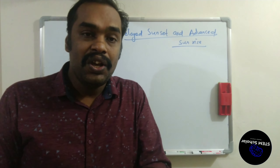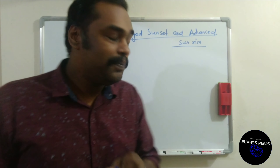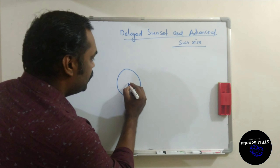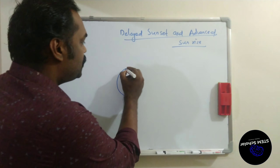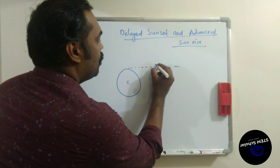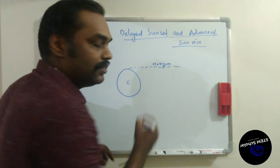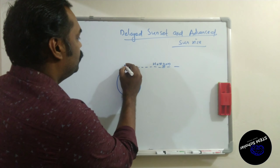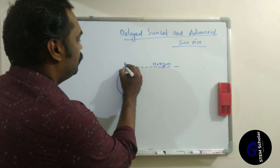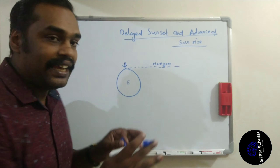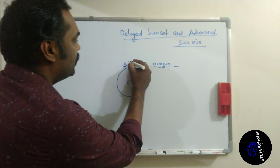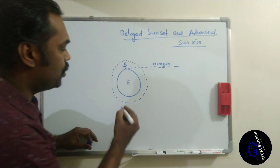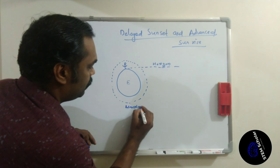We will come to that point. So we come to the physics behind it. We have Earth. This is Earth, and this is the horizon. Our observer is standing here, looking at the sun. We can see the atmosphere around the Earth.